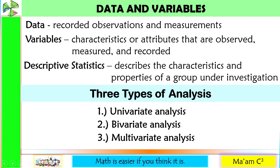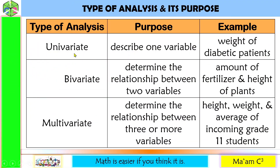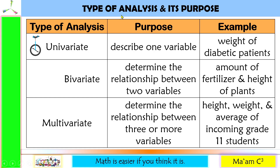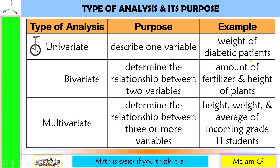Univariate — from its prefix 'uni' — means only one, just like a unicycle which has one wheel. The purpose of a univariate analysis is to summarize or describe one variable. An example from our earlier activity is the weight of diabetic patients.